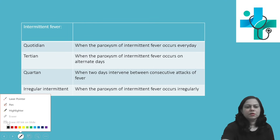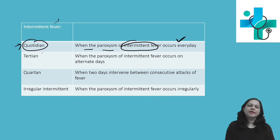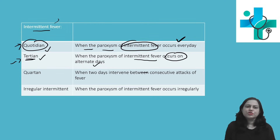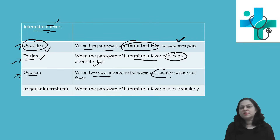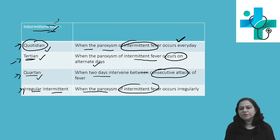Intermittent fever can be of many varieties. Quotidian intermittent fever is when the paroxysm occurs every day. Tertian intermittent fever is when the paroxysm occurs on alternate days. Quartan intermittent fever is when two days intervene between consecutive attacks of fever. Irregular intermittent fever is when the paroxysm occurs irregularly.